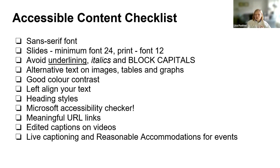Avoid underlining, italics and block capitals because they interfere with readability for everybody. When you have images, use alternative text. On your images, tables and graphs, alternative text means that if you're using a screen reader or read aloud software, it will read aloud what's in the image. If it's just decorative, you can tick a box to say so and the screen reader will skip past it. Use good color contrast. Left align your text rather than centered or justified. Use the heading styles embedded in the software, so somebody can click through headings rather than listening to an entire document. Use the Microsoft Accessibility Checker.